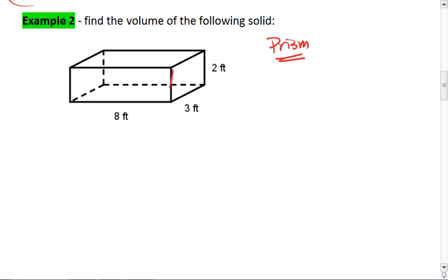In this one, I'm going to choose these sides to be our base. So here, B is going to be 3 times 2, which is 6 feet squared.